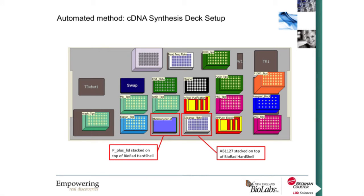This is a picture of the cDNA synthesis deck setup. We have a 96-channel wash station, an orbital shaker under one plate, our integrated T-Robot on deck, a static Peltier to maintain master mixes at 4 degrees, and various ALPS. This deck is reflected in the deck setup of our Biomek FXP behind me. If doing on-deck thermocycling, the method will add a stackable lid to the plate for thermocycling. If not, that labware is eliminated from the deck setup. To its right, we have an AB-1127 plate stacked on top of a BioRad hard shell.